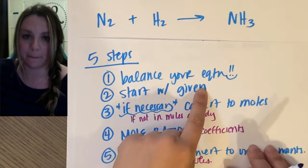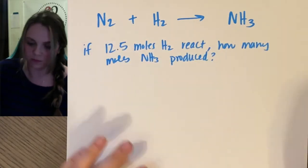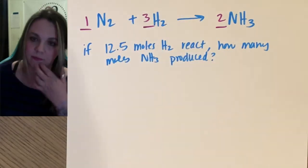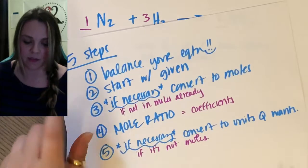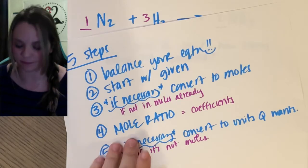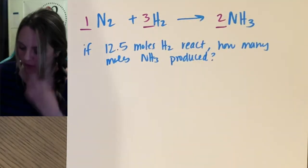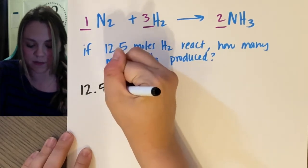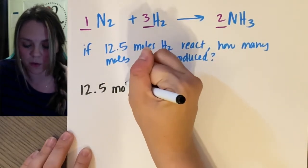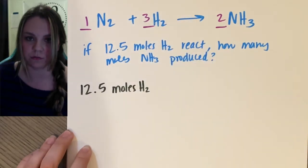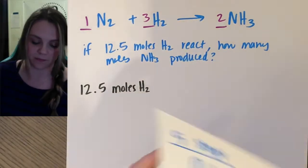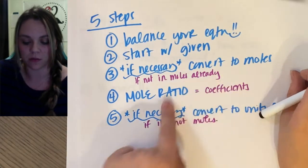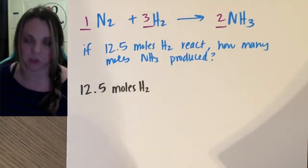Done. Step two, start with your given. I have 12.5 moles of H2. Cool. Step three, if necessary convert to moles. I'm already in moles, don't need to do that.